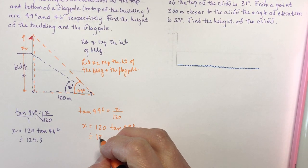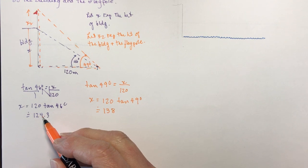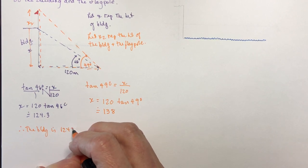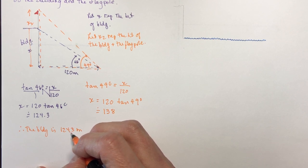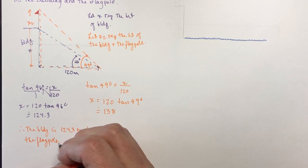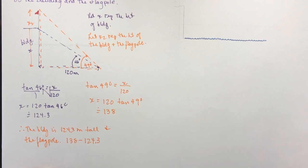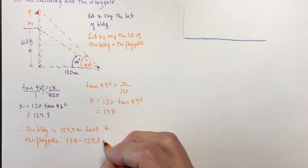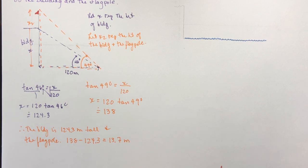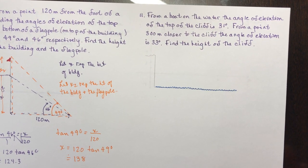x2 is approximately 138. So we have the two heights. Therefore the building is 124.3 meters tall, and the flagpole is 138 minus 124.3, which is about 13.7 meters. That's a big flagpole, but it's a math question.